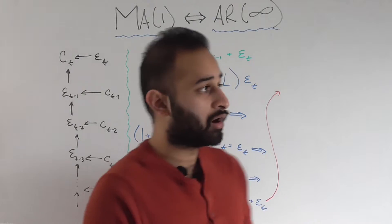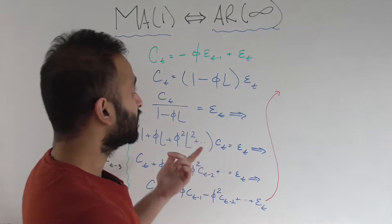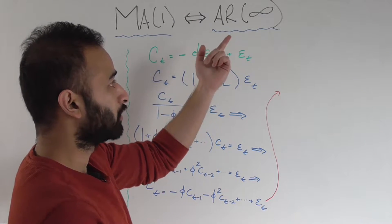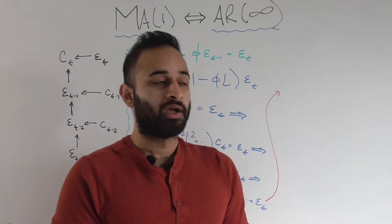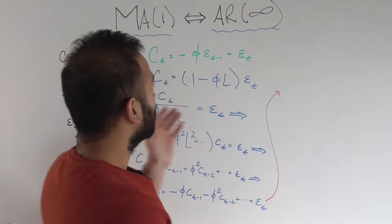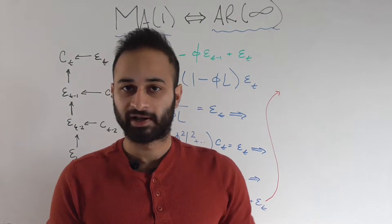So this first video will be on talking about how a MA1 model, or a moving average order 1 model, is really just an AR infinity model. That seems weird, right? Infinite lags, but we'll look at how it makes sense. The second video we'll make after this will be how an AR1 model is an MA infinity model. So just switching the orders there.